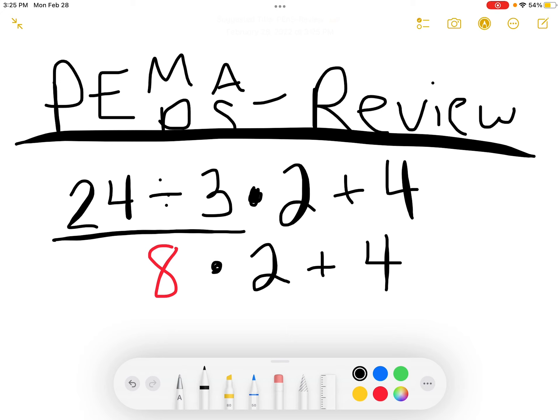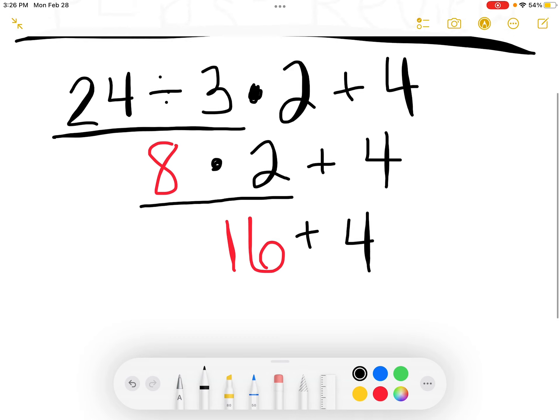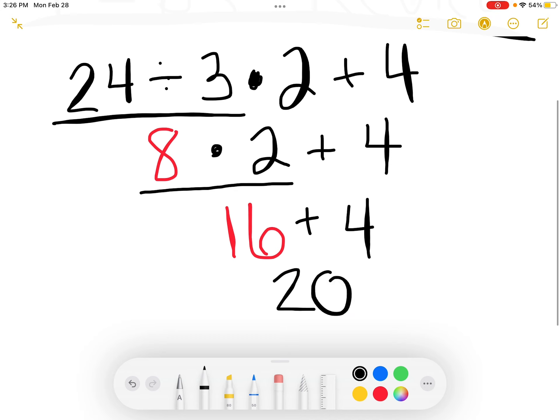If you don't remember what a dot means, that means to multiply. So next, we've already taken care of our division. The next thing we would take care of is that multiplication before we're able to move on to our addition. 8 times 2 gives us an answer of 16. And we bring down the plus 4. Last step is 16 plus 4, which gives us 20.